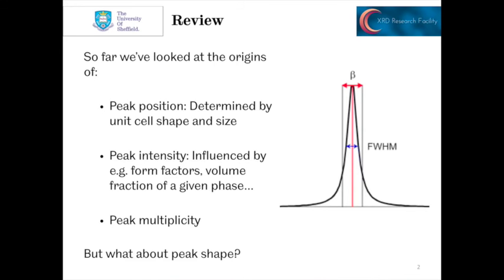We've looked at several things so far in terms of peaks and diffraction patterns. We've looked at the position and how that's determined by unit cell shape and size. And we've looked at peak intensity and peak multiplicity, which tie into the number of peaks that we see and their intensity - form factors, volume fraction of a given phase, and so on. But what about the shape of peaks?